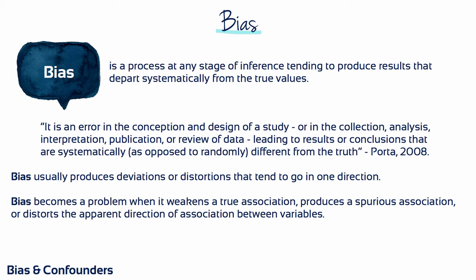Bias is a process at any stage of inference, tending to produce results that depart systematically from true values. It's an error in the conception and design of a study, or in the collection, analysis, interpretation, publication or review of data, leading to results or conclusions that are systematically, as opposed to randomly, different from the truth.